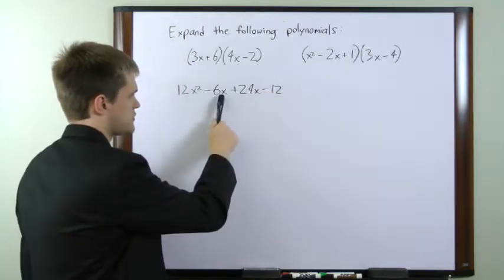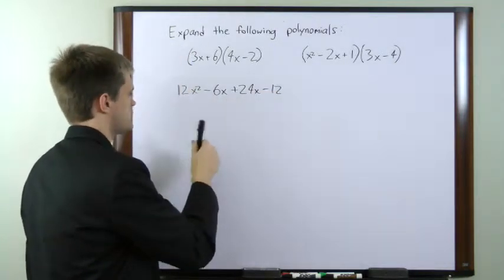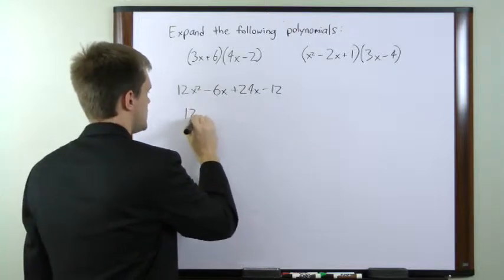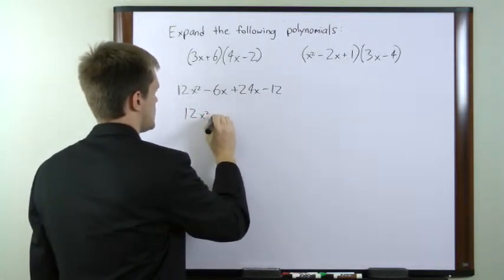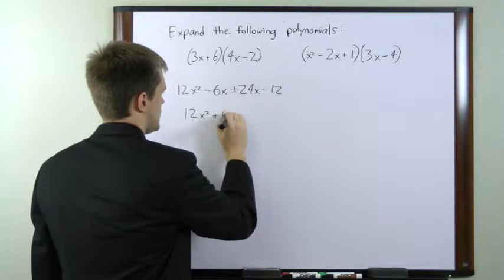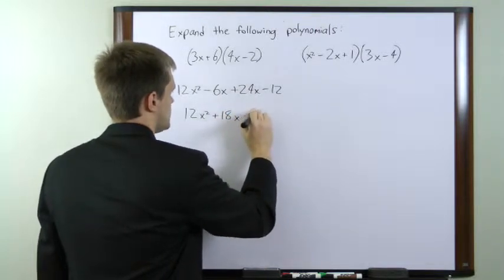We need to combine like terms. We have two x's here, so we'll go ahead and combine those. That gives us 12x squared plus 18x minus 12.